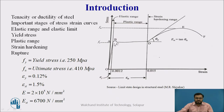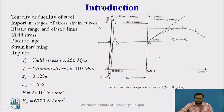First of all, point A is the limit of proportionality. Point B is the upper yield point. Point C is the lower yield point. CD is the plastic range, and point D is the point at which strain hardening starts. Point E is the ultimate load carrying capacity — the ultimate tension or compression carrying capacity — and point F is the fracture point.